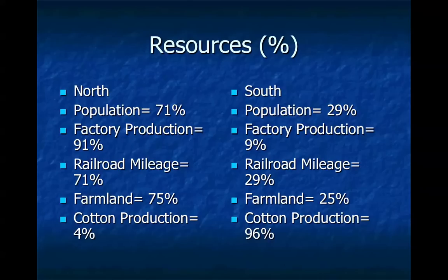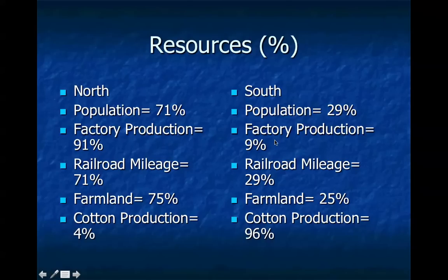We're going to talk a little bit about the resources of both sides. We'll talk about the North, or the Union, first. When you divide everything up out of 100 percent, the North has the advantage in total population — 71 percent versus only 29 percent for the South. So the North had a lot more people and a lot more people resources. In factory production, the advantage is even greater. We've talked about how the North was industrial while the South was farming. A full 91 percent of America's factory output was in the North, giving them a much greater ability to manufacture weapons necessary for the Civil War.